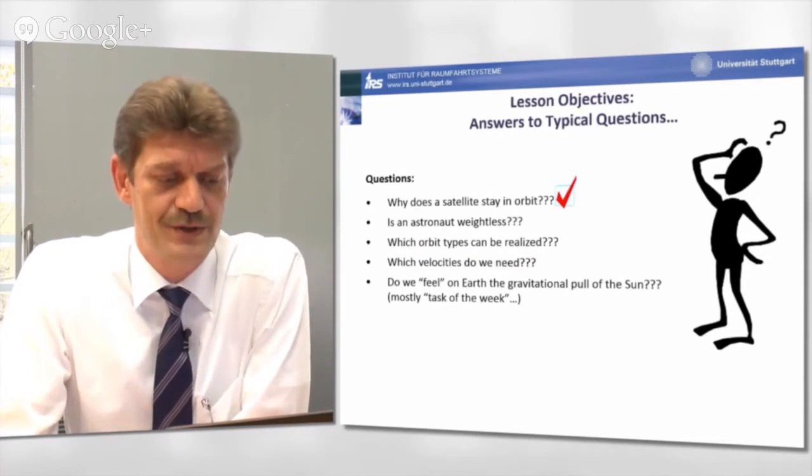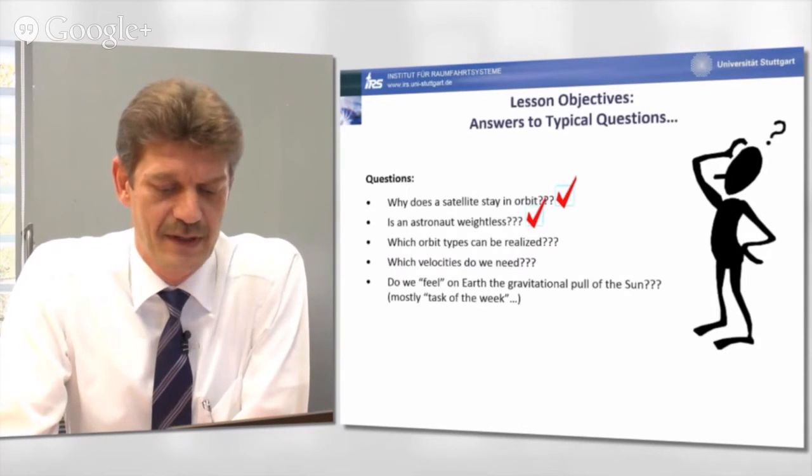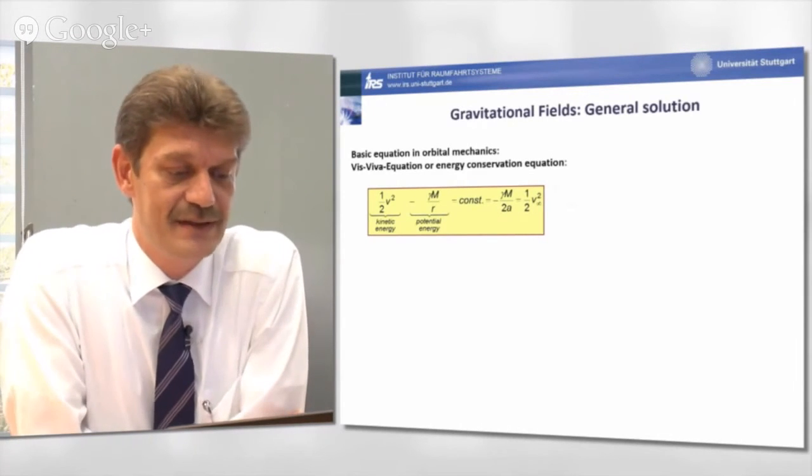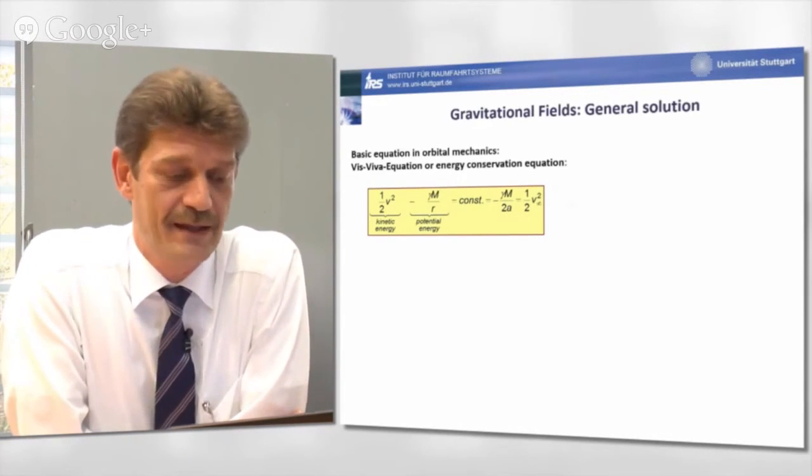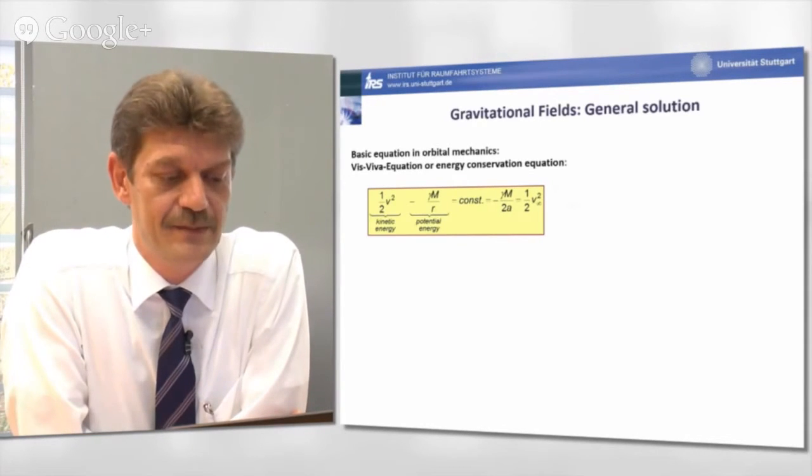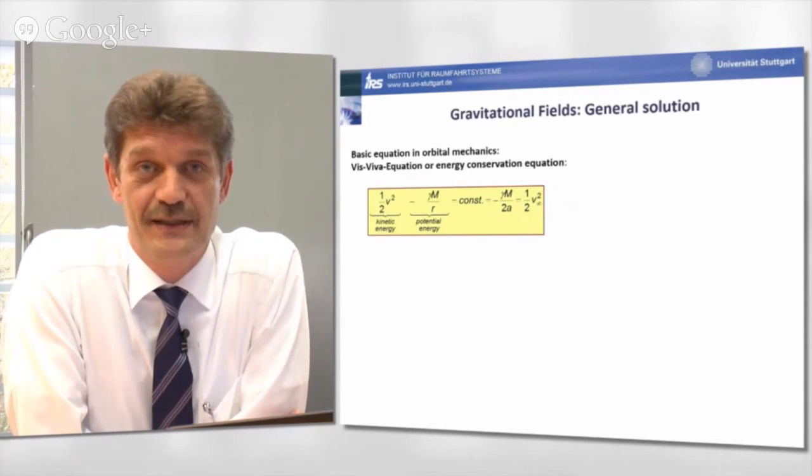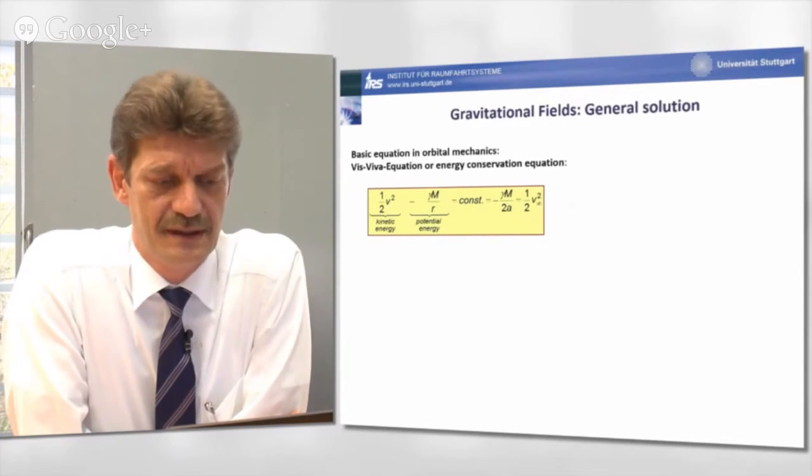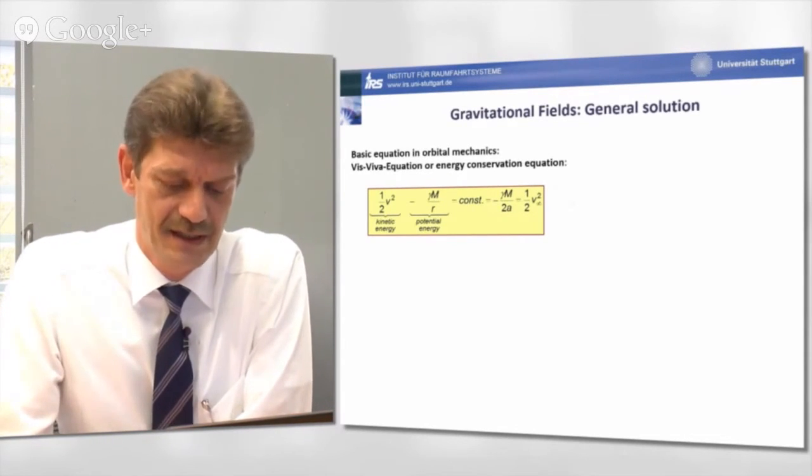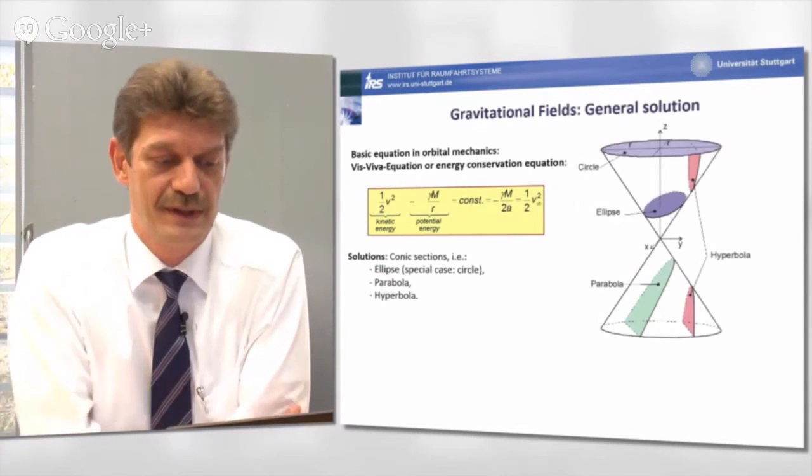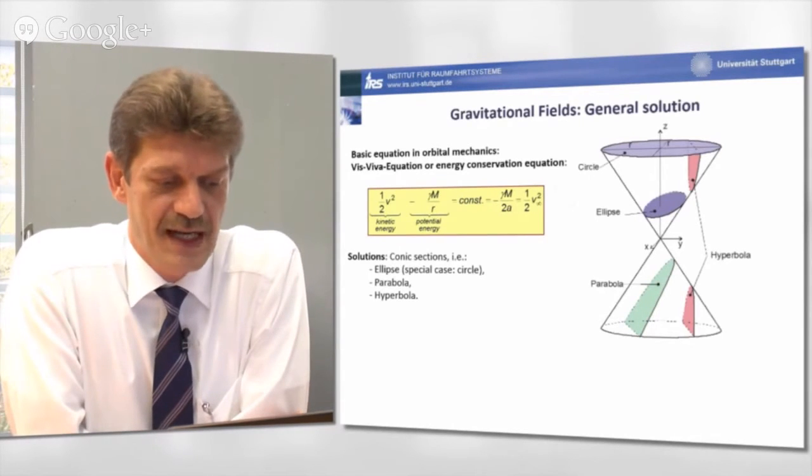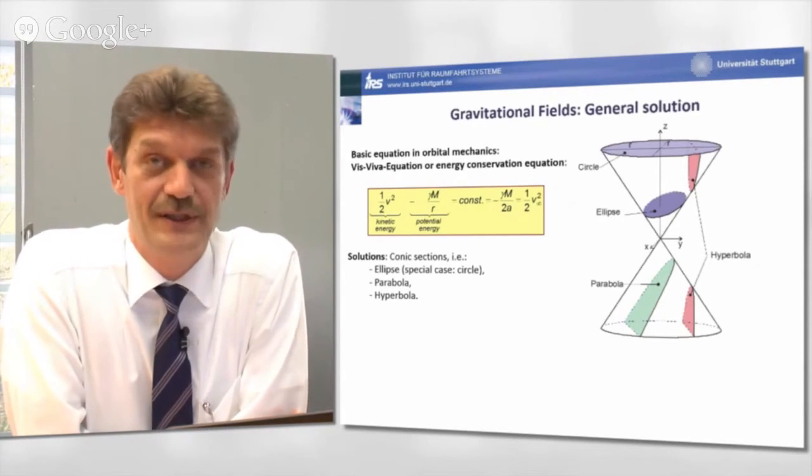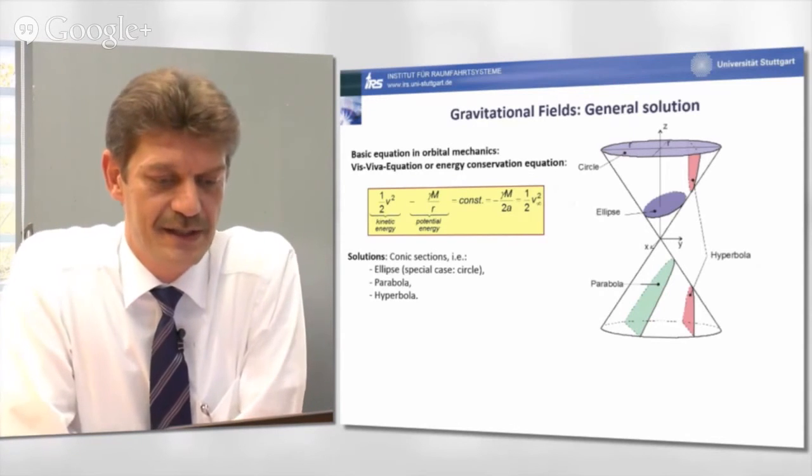The next question is, which orbit types can be realized? Well, one of the basic equations in orbital mechanics is the so-called Vis-Viva equation or energy conservation equation, which means nothing else than the kinetic energy plus the potential energy of a satellite orbiting a central mass must be constant. If you discuss this equation more thoroughly, it turns out the solutions for the possible orbit of this equation are so-called conic sections, which means nothing else than elliptical, parabolic, or hyperbolic orbits, as sketched here on the right-hand side of this slide.